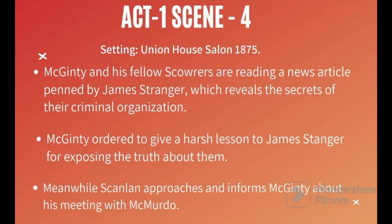In Scene 4, the setting is Union House Salon, 1875. McGinty and his followers are reading a news article penned by James Stranger, which reveals the secrets of their criminal organization. McGinty ordered to give a harsh lesson to James Stranger for exposing the truth about him. Meanwhile, Scanlon approaches and informs McGinty about his meeting with McMurdo.